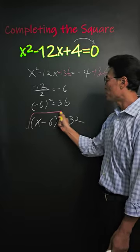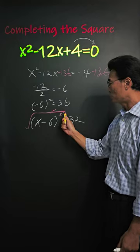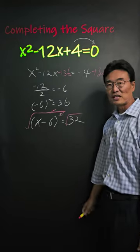To solve for x, we need to take the square root to get rid of that squared term. And of course, we have to do the same on the right side.